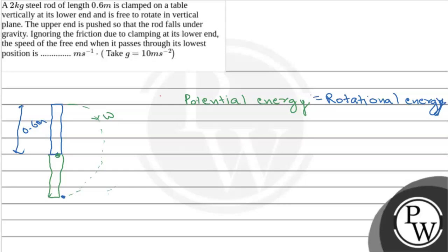So, potential energy formula is mgl where m is mass of the rod, g is gravitational acceleration, and l is length of the rod. This equals rotational energy formula, half I omega square.